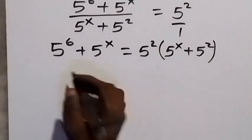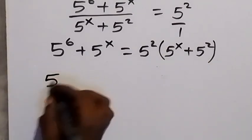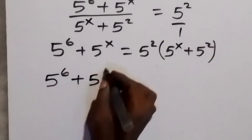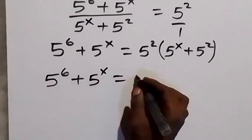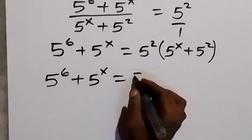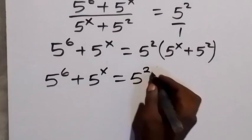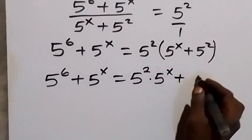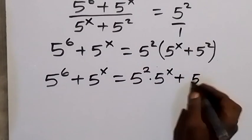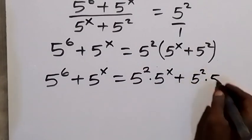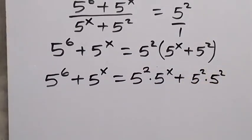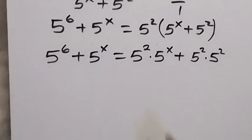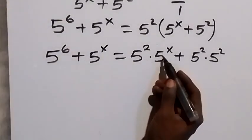From here we can open the bracket. Then we have 5 raised to power 6 plus 5 raised to power x equals 5 raised to power 2 times 5 raised to power x, plus 5 raised to power 2 times 5 raised to power 2.